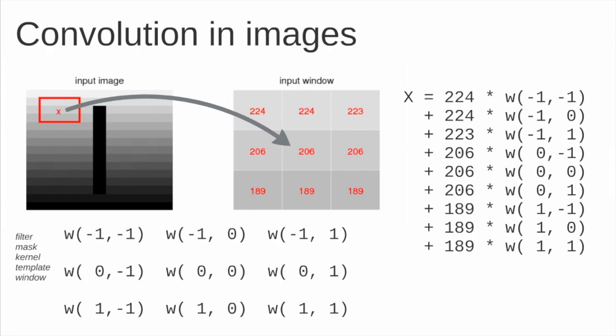The result of the convolution in this position X will be the result of this weighted sum: the first value multiplied by the first weight plus the second value multiplied by the second weight, up to the last value multiplied by the last weight.